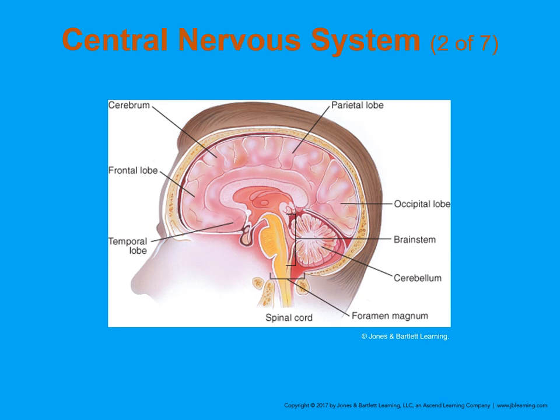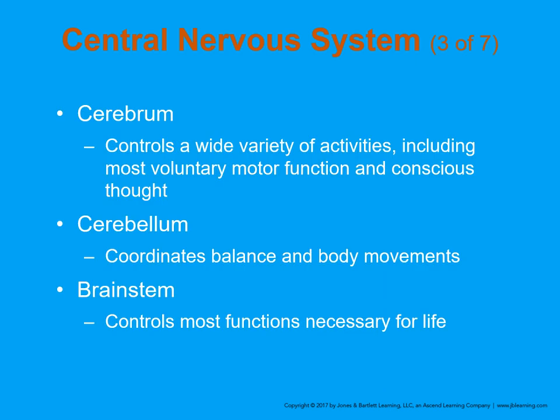In the brain stem, sometimes called the midbrain, and the cerebellum, our more autonomic nervous system functions take place. The cerebrum controls a wide variety of things including higher motor functions and conscious thought — the part that makes us who we are. The cerebrum controls balance and body movements, while the brain stem controls the necessary functions for life.